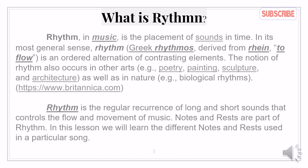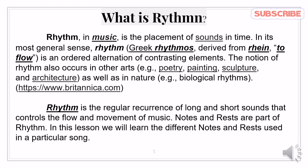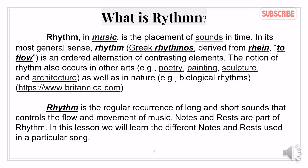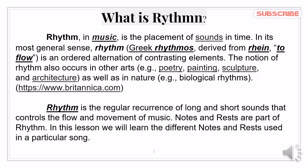What is Rhythm? Rhythm in music is the placement of sounds in time. In its most general sense, rhythm — Greek 'rhythmos', derived from 'rhein', which means to flow — is an ordered alternation of contrasting elements.